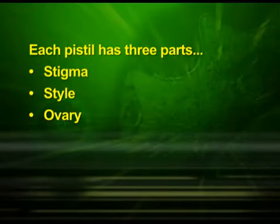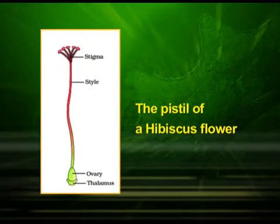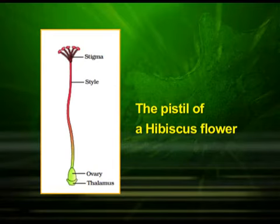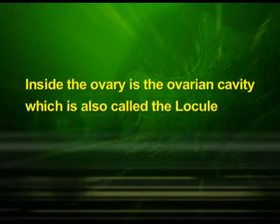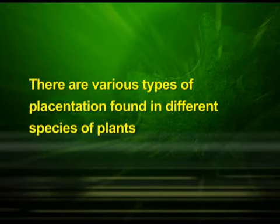Each pistil has three parts: the stigma, style, and ovary. We can observe the pistil of a hibiscus flower in this diagram where all other floral parts are removed. The stigma serves as a landing platform for pollen grains. The style is the elongated slender part beneath the stigma. The basal bulged part of the pistil is the ovary. Inside the ovary is the ovarian cavity, also called the locule. The placenta is located inside the ovarian cavity, and arising from the placenta are the megasporangia, which are commonly called ovules.